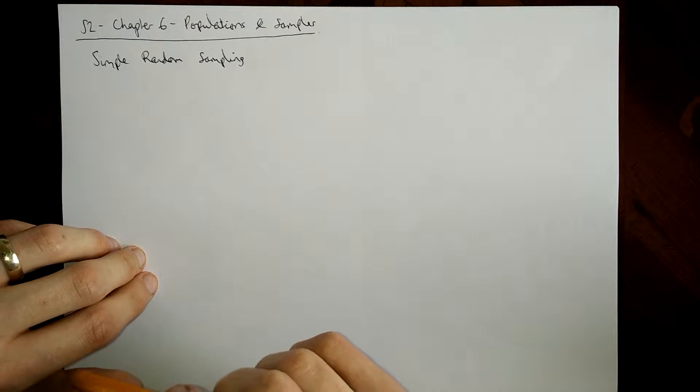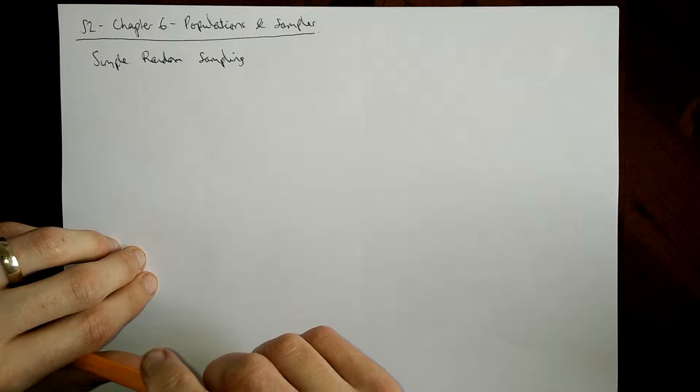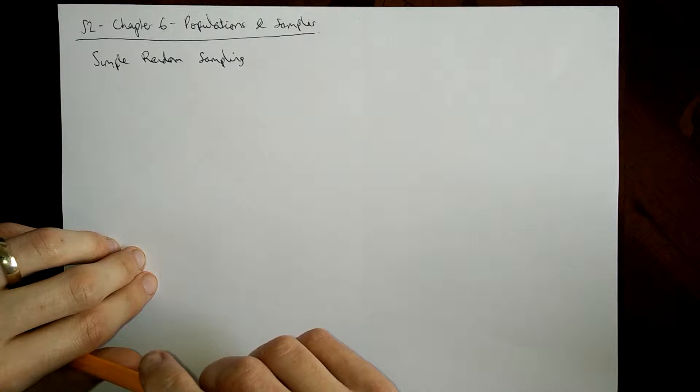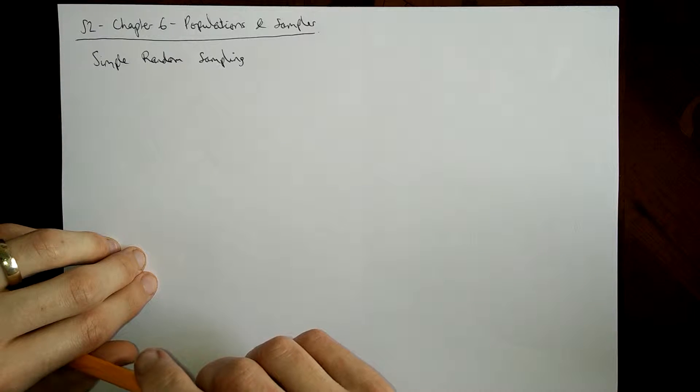Hello and welcome to this video on S2 Chapter 6, Populations and Samples. This is the second video on this chapter and in this video we're looking at a few things. The first thing is simple random sampling, what that means. Then we're looking at population parameters and statistics, the difference between a population parameter and a statistic. And then the last thing to cap it all off, we'll look quickly at what a sampling distribution is.